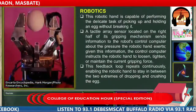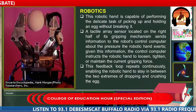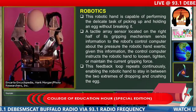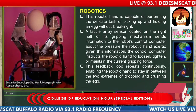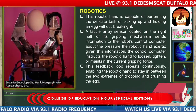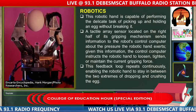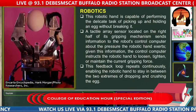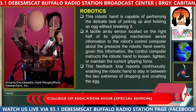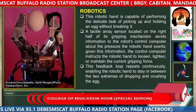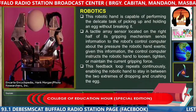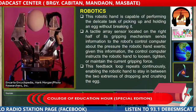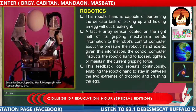Let's proceed with robotics. This robotic hand is capable of performing the delicate task of picking up and holding an egg without breaking it. A tactile array sensor located in the right half of its gripping mechanism sends information to the robot's control computer about the pressure the robotic hand exerts. In these modern times, up to this 21st century, we are glad that there is massive development, and we are encouraged by the integration of robotics in the scientific community.